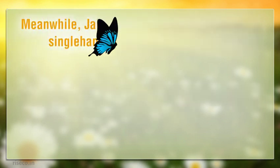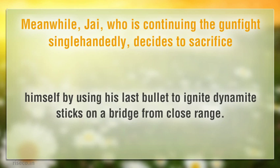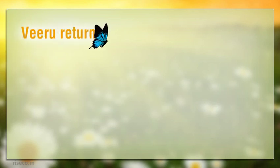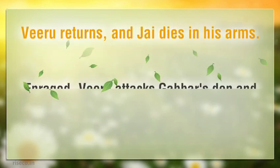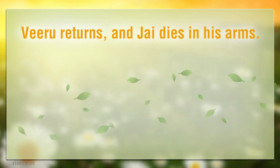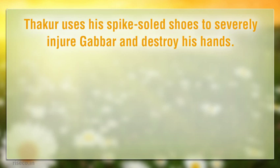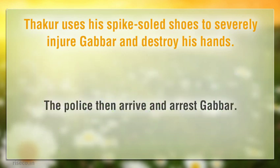Jai, continuing the gunfight single-handedly, decides to sacrifice himself by using his last bullet to ignite dynamite sticks on a bridge from close range. Veeru returns and Jai dies in his arms. Enraged, Veeru attacks Gabbar's den and catches the dacoit. Veeru nearly beats Gabbar to death when Thacker appears, reminding Veeru of the promise to hand Gabbar over alive. Thacker uses his spiked shoes to severely injure Gabbar and destroy his hands. The police then arrive and arrest Gabbar.